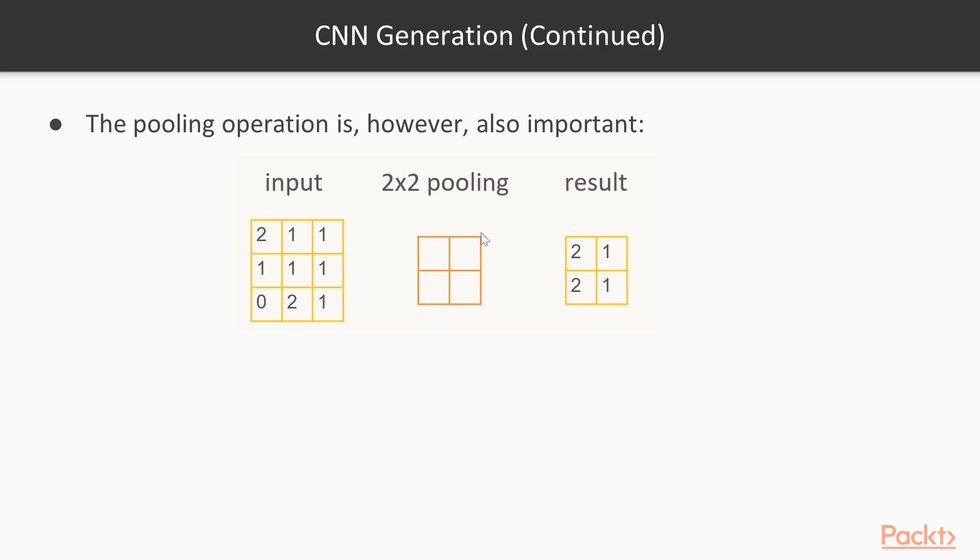So if we pass this rectangle over this input, first it will pass over this subarray here, and the maximum out of these four values will be 2. So we write 2 to the result.